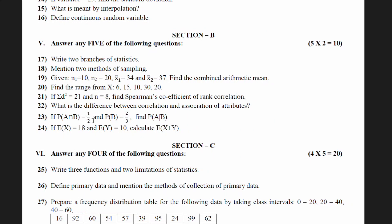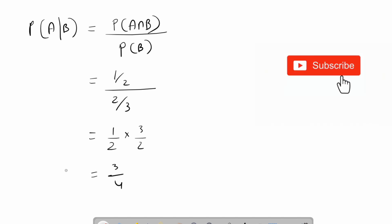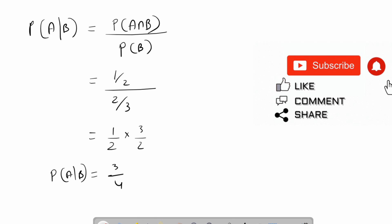Question 23: if P(A∩B) = 1/2 and P(B) = 2/3, find P(A|B). The formula is: P(A|B) = P(A∩B) / P(B). Note that the vertical bar means 'A given B' — A subjected to condition B. Substituting: P(A|B) = (1/2) ÷ (2/3) = (1/2) × (3/2) = 3/4. So P(A|B) = 3/4.